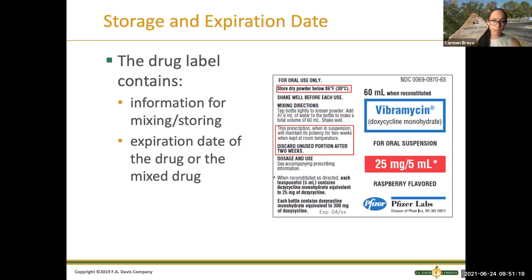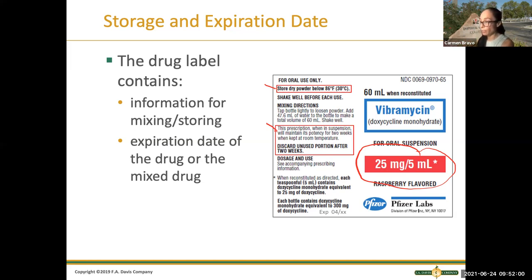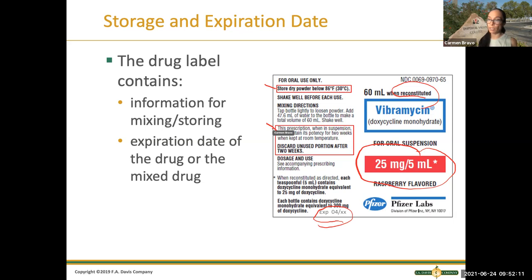The storage and the expiration date — this label says to store the dry powder below 86 degrees Fahrenheit. For oral antibiotics you have to reconstitute by adding water: once reconstituted, the medication has to be kept in the refrigerator or at room temperature depending on the medication, and it's only good for two weeks after reconstitution. So after two weeks you have to discard it despite the expiration date printed — if you already reconstituted it, you go by how long it's good for.